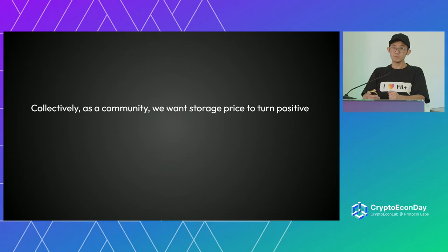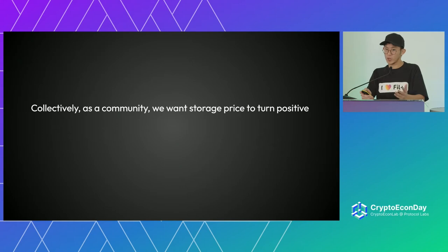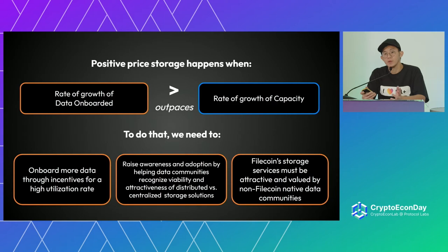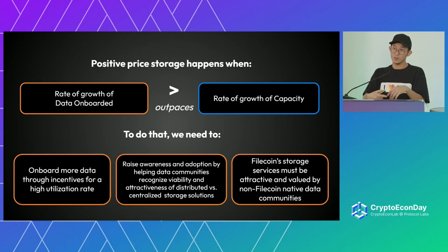Collectively as a community we want storage price to turn positive — we are not supporters of negative price as a permanent state, it's just a function of market dynamics. How can it happen? The rate of growth of data onboarded must greatly outpace the rate of growth of capacity. To do that we need to onboard more data through incentives for a higher utilization rate, which raises awareness and adoption by helping data communities understand the attractiveness of storing data on Filecoin.